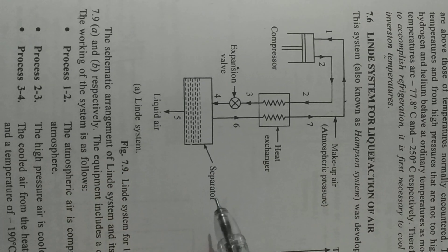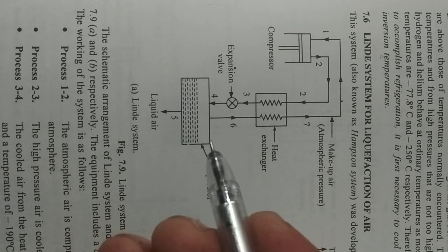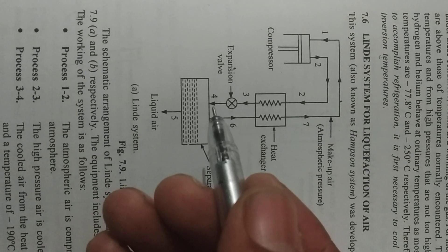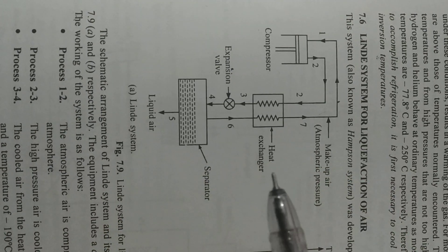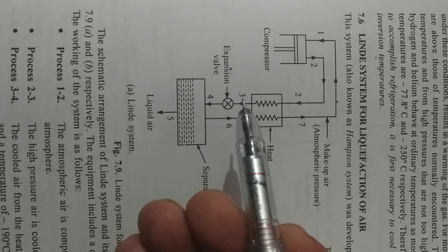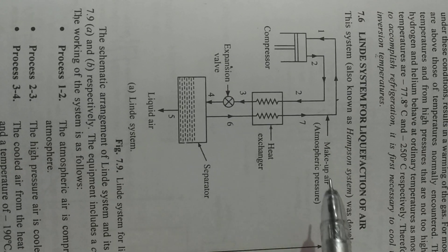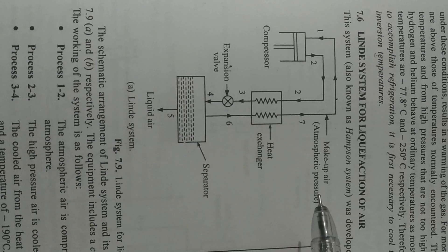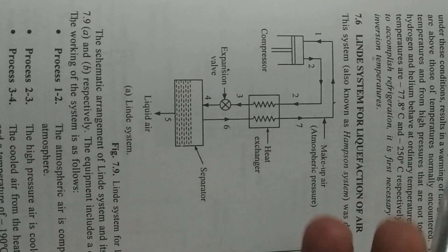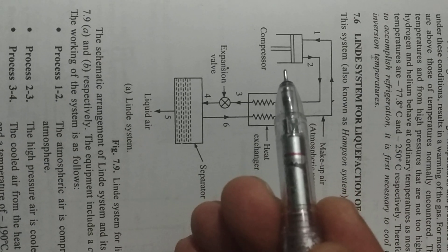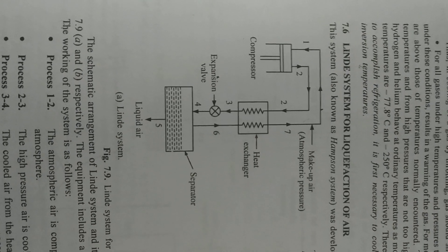The liquid air is separated with the help of a separator and taken out. The remaining unliquefied air particles are taken back to the heat exchanger, which extracts heat from the high pressure air. This air then mixes with makeup air from the atmosphere, which is again compressed in the compressor. This whole process is the Linde system for liquefaction of air.